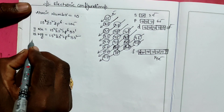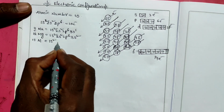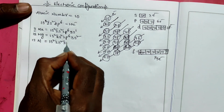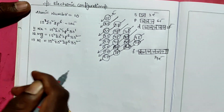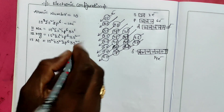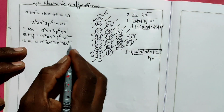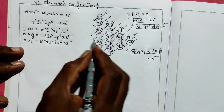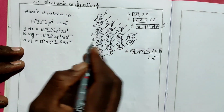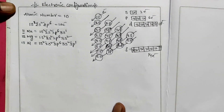Atomic number 13 is aluminum. Electronic configuration: 1s2, 2s2, 2p6, 3s2 — up to here is 12 electrons, same as magnesium. The 13th electron enters 3p, so we add 3p1. That is the aluminum electronic configuration. Atomic number 14 is silicon: 1s2, 2s2, 2p6, 3s2, 3p2.